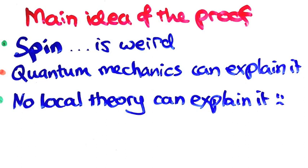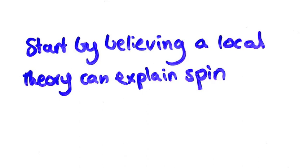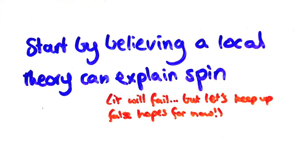We'll do that by a proof by contradiction. In other words, we'll start by believing that it is possible and see what happens. There's one particular experiment with spin we'll try and explain.